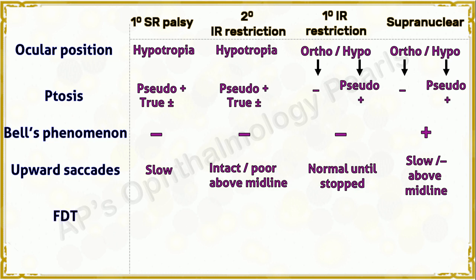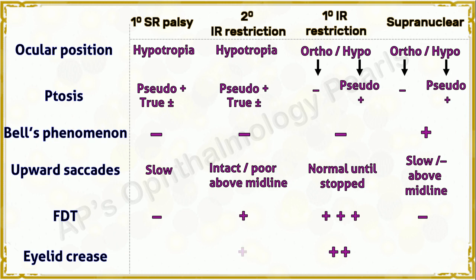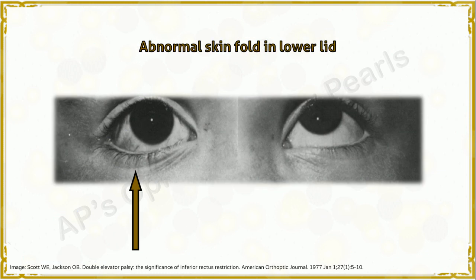The force duction test is strongly positive in primary inferior rectus restriction and only weakly to moderately positive in secondary inferior rectus restriction. In inferior rectus restriction, there is a prominent lower eyelid crease that is accentuated while looking upwards, and this is greater in primary than in secondary inferior rectus restriction. Here you can see the exaggerated lid crease on the side of inferior rectus restriction.